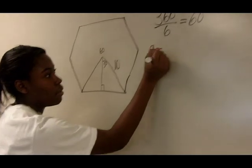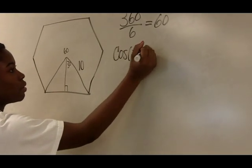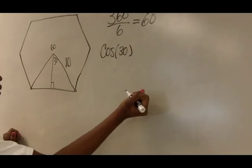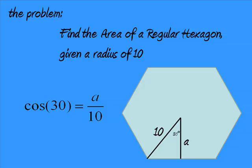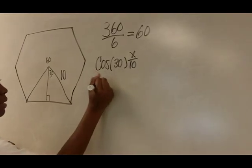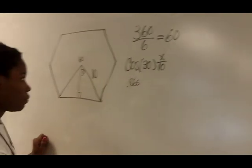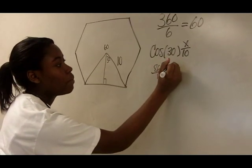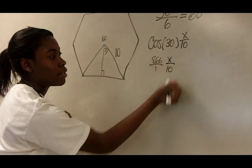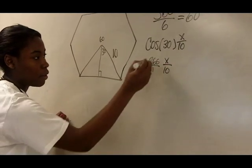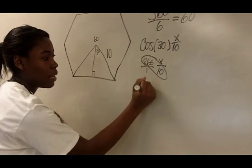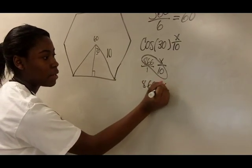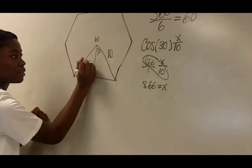So I'm going to do cosine of 30 is equal to x over 10. 0.866 over 1, and then it's going to be x over 10 still. And then you're going to want to cross multiply to get what x is. So it's going to be 8.66 is equal to x. So the apothem is 8.66.